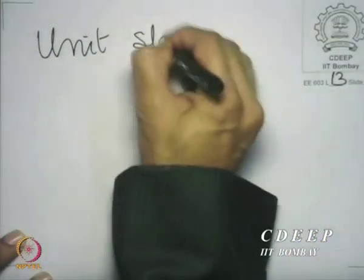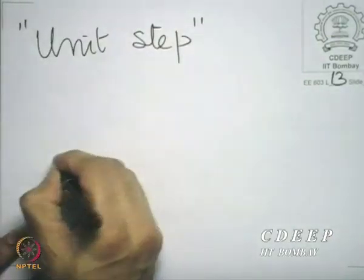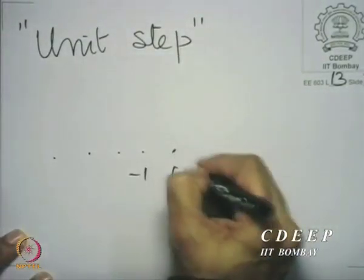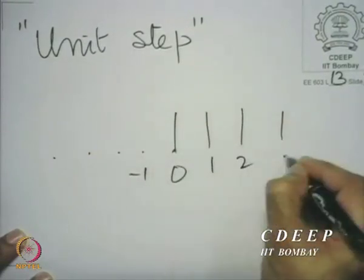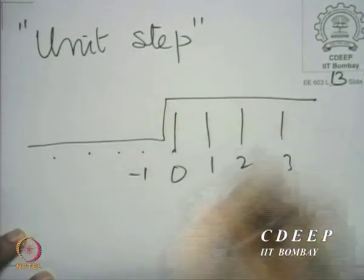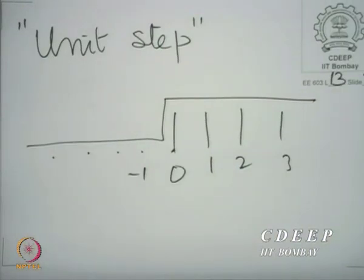It is called a unit step because it looks like a unit step. This unit step function is a very important function in discrete time signal processing. One importance is that when you multiply the unit step by any function, it retains the positive side of samples and destroys the negative side. So it is useful in concept.